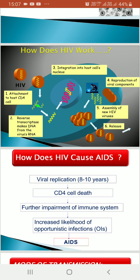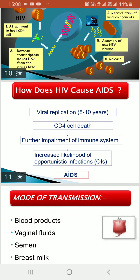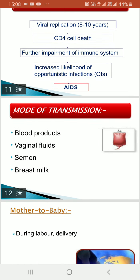How does HIV cause AIDS? There will be viral replication for 8 to 10 years. Then there will be CD4 cell death due to destruction of CD4 cell RNA, because the virus uses that RNA for replication. So CD4 cells keep getting destroyed. This impairs our immune system and increases the likelihood of opportunistic infections, finally resulting in AIDS.